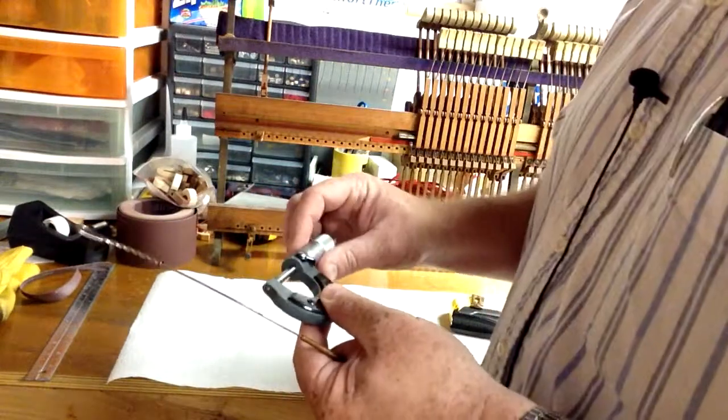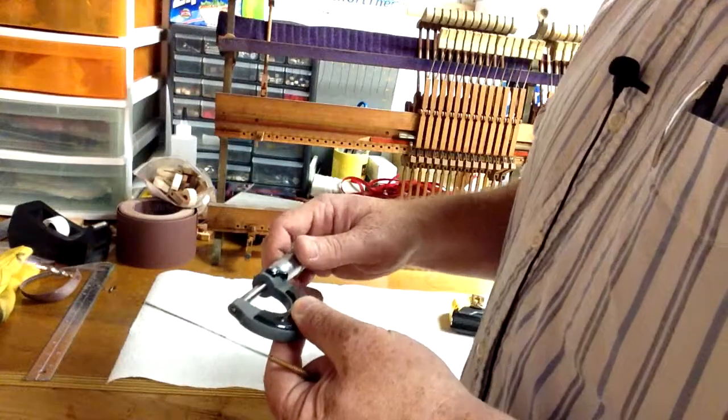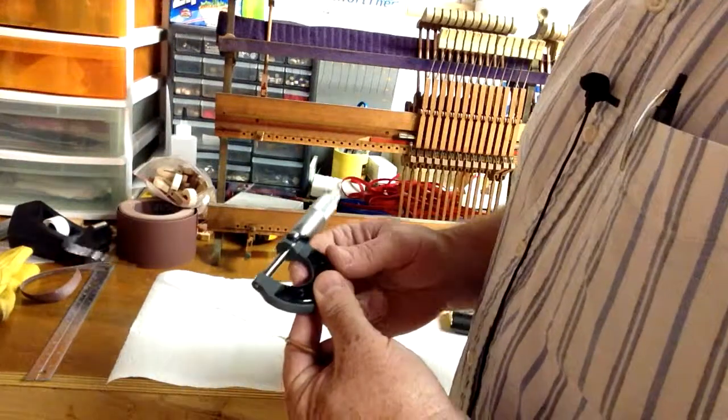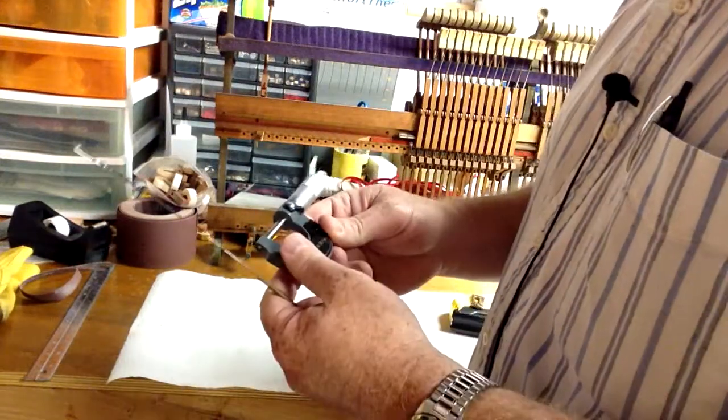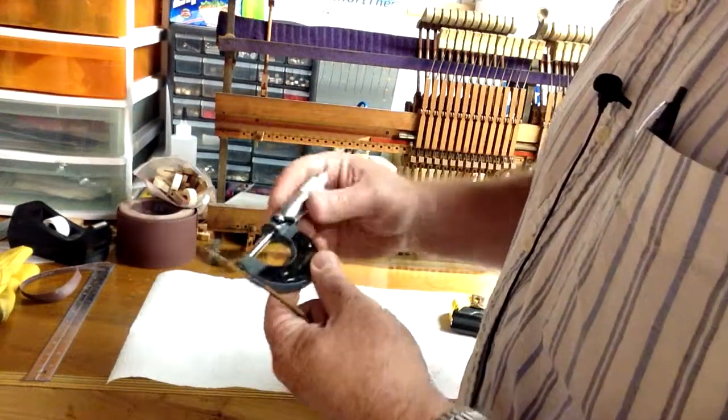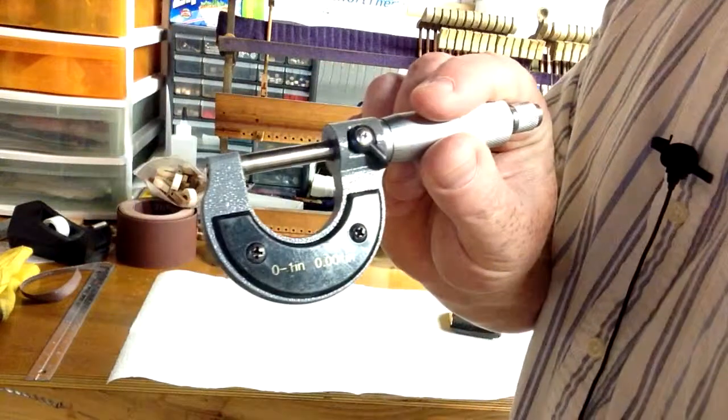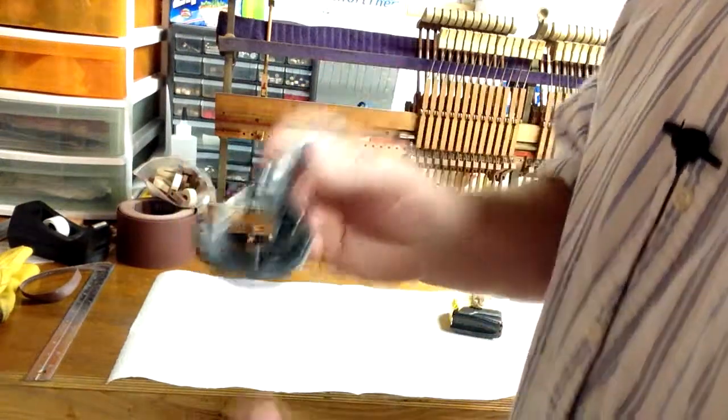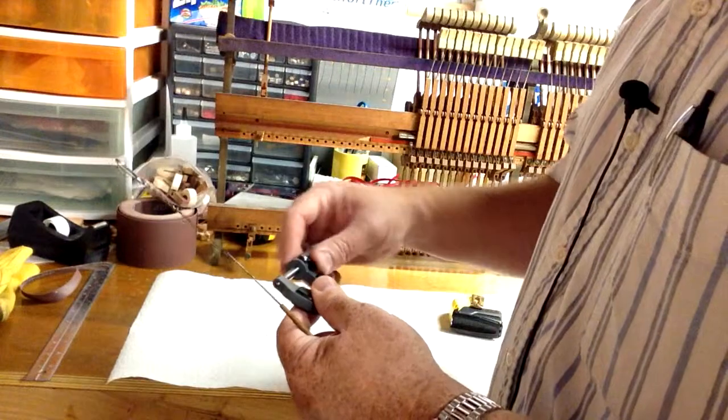You can use a caliper too if you've got one, but either way, you've got to have a tool that measures to the nearest one thousandths of an inch, so 0.001 inch increments. So like this one, as you can see, has 0.001 inch increments.